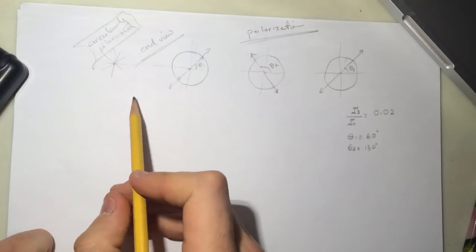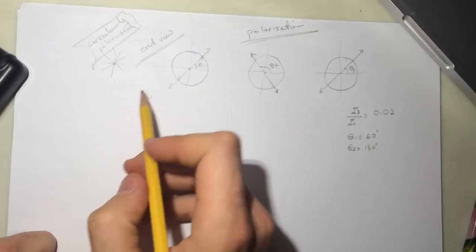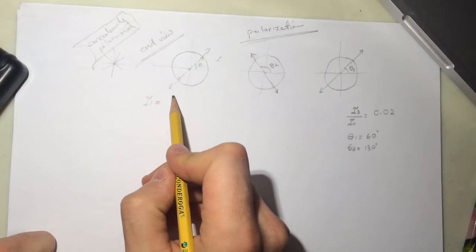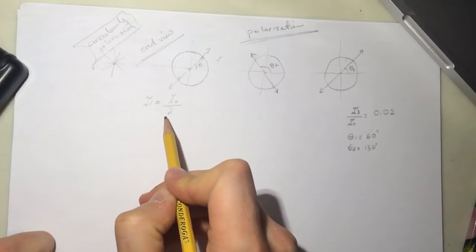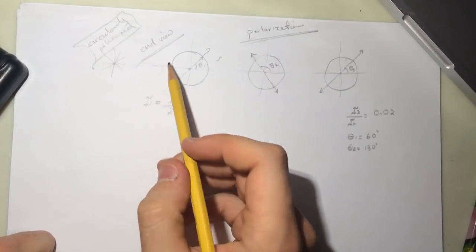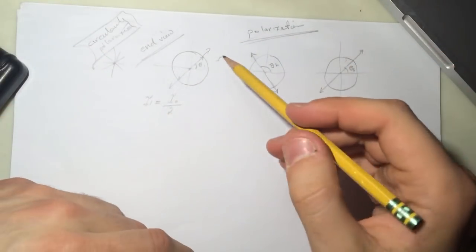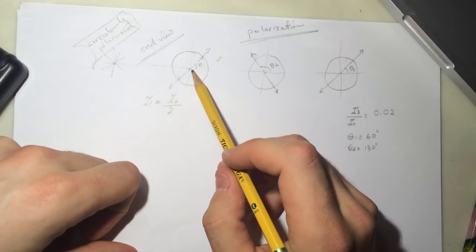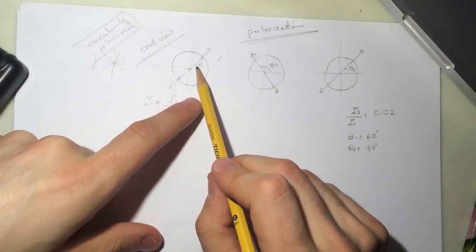All right, so we start this problem like this. So the intensity 1, which is after it gets out of here, so it's here, will be equal to i initial over 2. So all the lights will be coming in different shapes or whatever, but the only thing that's going to pass is the one with only 60 degrees with the axis.